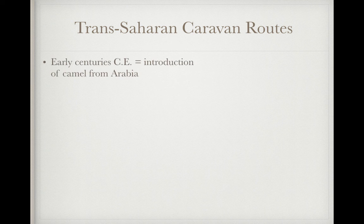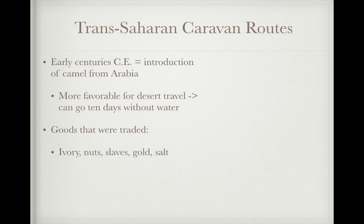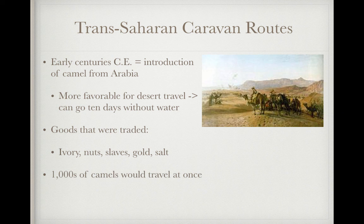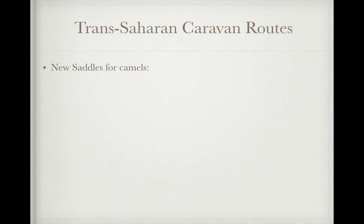Trans-Saharan caravan routes — jumping over to Africa. In the early centuries CE, there was the introduction of the camel from Arabia. Camels are more favorable for desert travel: they can go ten days without water and drink an obscene amount of gallons of water in just a couple of minutes. So camels are very conducive for this dry, hot climate. Goods traded on the Trans-Saharan caravan routes included ivory, nuts, slaves, gold, and salt. Thousands of camels would travel at once with hundreds of people, and this linked West Africa with North Africa and Europe.